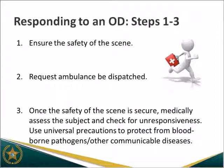We're going to go through the steps geared towards law enforcement responding to an overdose. Some of this was taken from protocols, policies, and procedures from law enforcement in Florida and other states who have implemented naloxone programs — every agency adapts it to their culture. The first thing would be ensuring the safety of the scene for the officer; you wouldn't immediately run up and administer naloxone. You'd make sure nobody else is on the scene or hiding, there aren't any weapons, etc. If an ambulance has not already been dispatched, you would request one, then assess the subject and check for unresponsiveness, following your agency's universal precautions regarding OSHA guidelines for communicable diseases and blood-borne pathogens.